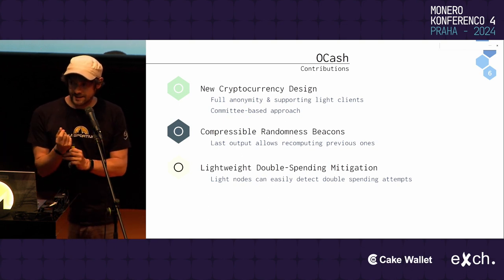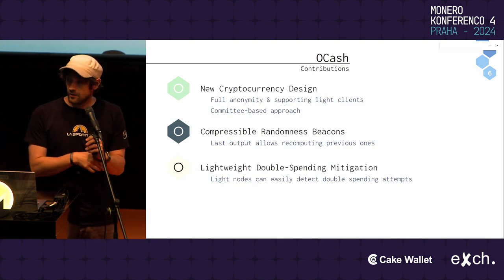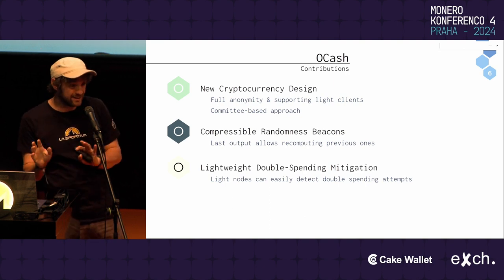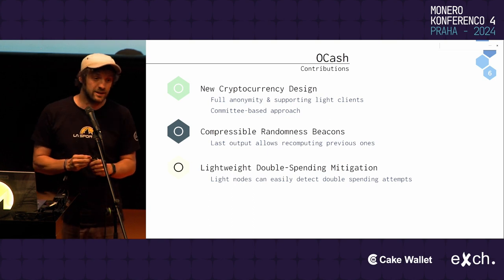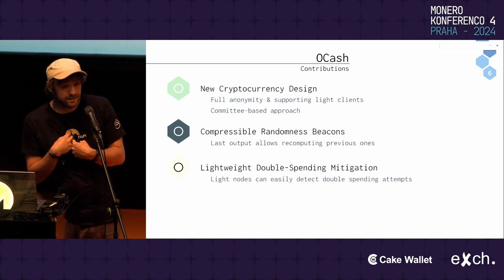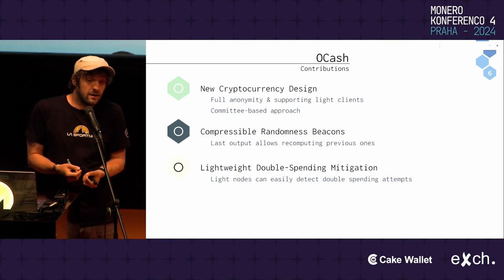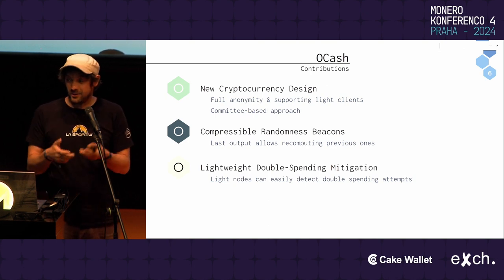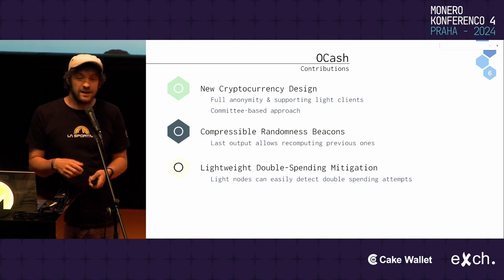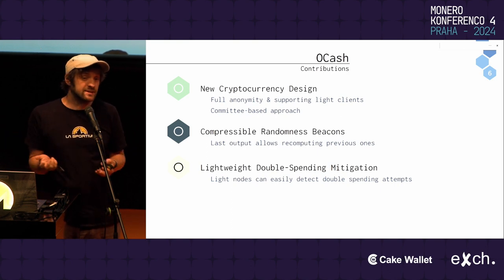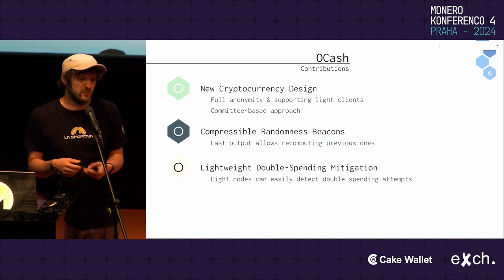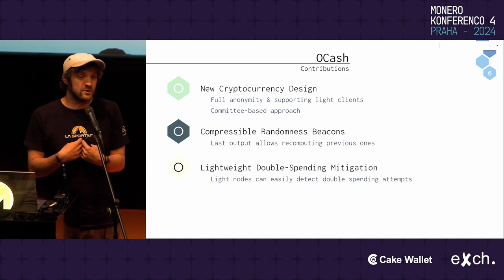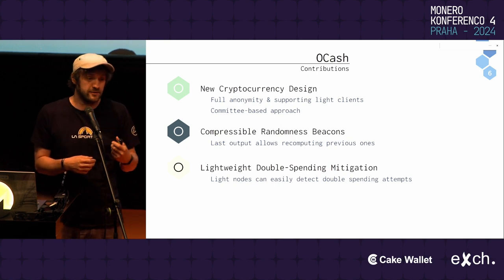Another problem when combining light clients and anonymous payments is preventing double spending. If I'm a light client and receive a payment, I'd somehow like to check it's not a double-spending attempt. What we show is that you can do this in a fashion that more or less doesn't require the receiver to look at the blockchain at all — it just needs to keep track of the payments received from that specific payer.